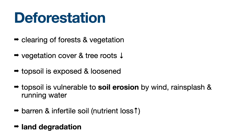When the vegetation is removed, the tree roots are also gone, so the soil becomes loosened. When we have heavy rain or strong wind, the top loose soil will be washed away or blown away by wind and water. As a result, we have soil erosion — removal of soil particles.